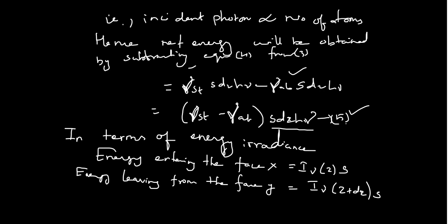After obtaining equations 3 and 4, the net energy is found by subtracting them: stimulated emission minus rate of absorption. Subtracting equation 4 from equation 3, the common factor S · dz · hν is taken outside, giving equation 5. This represents the net energy generated in the slice due to the difference between stimulated emission and absorption.